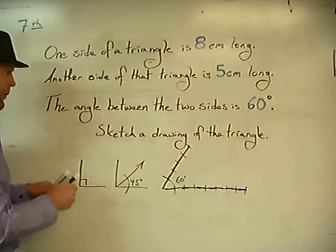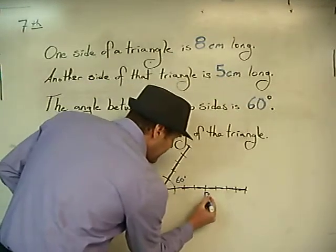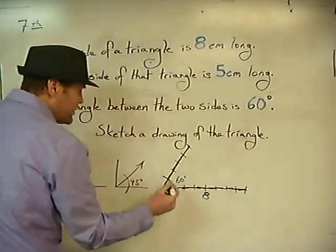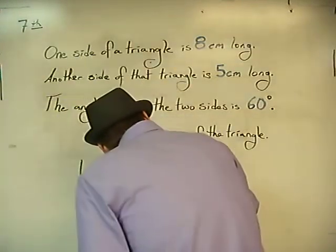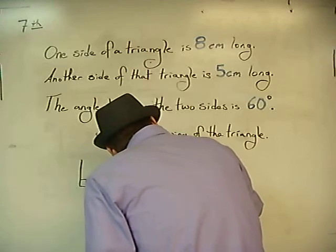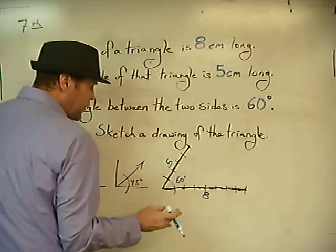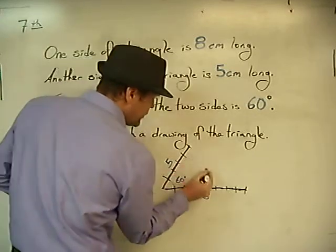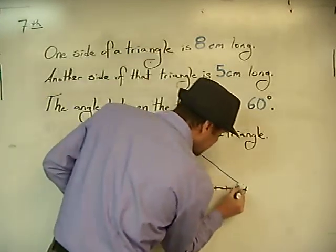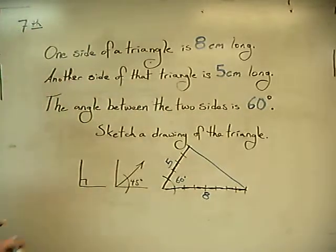So looking at that, I'm going to go ahead and label this with an eight, eight centimeters this way. I'm going to go ahead and label this with a five. There's five centimeters going that way. So looking at this, the only thing that's left to do is to complete our triangle just like that.